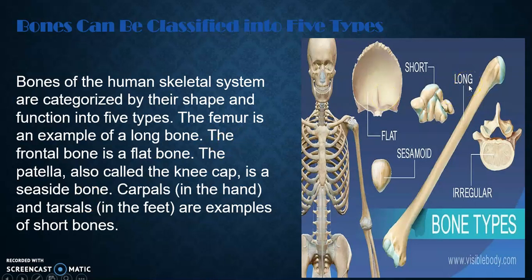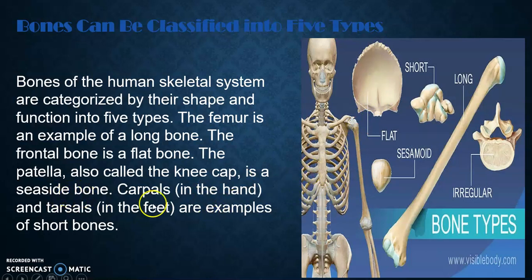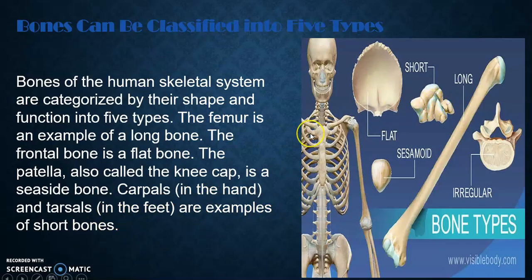The frontal bone is a flat bone. The patella, also called the kneecap, is a sesamoid bone. Carpals in the hand and tarsals in the feet are examples of short bones.